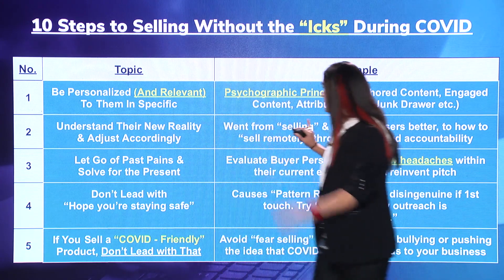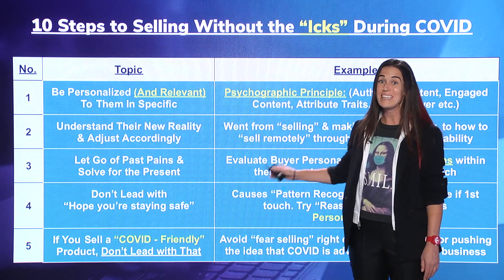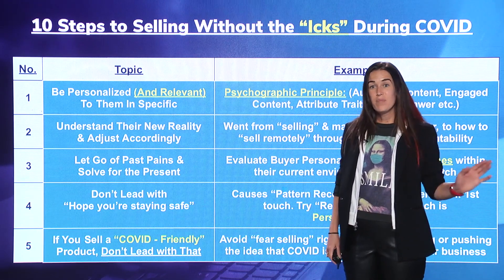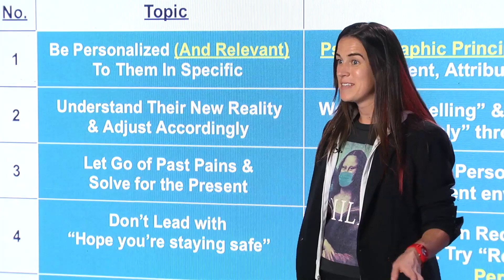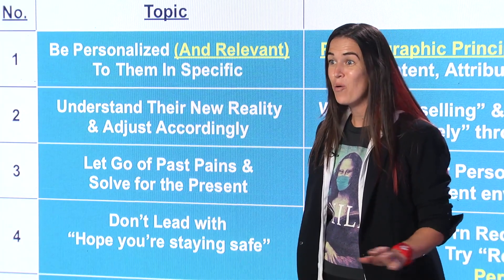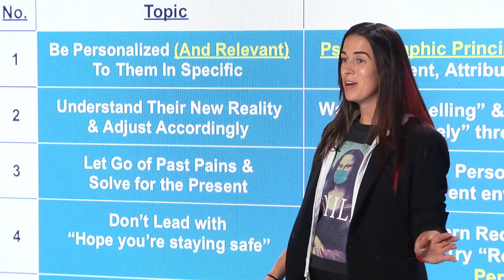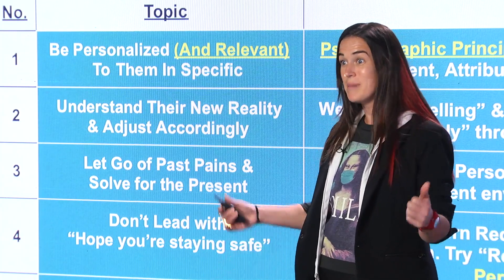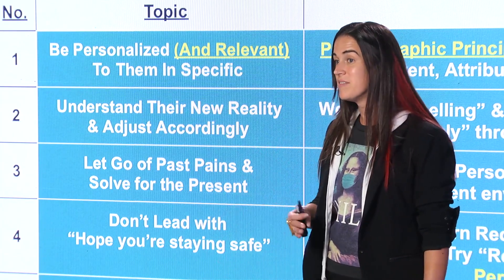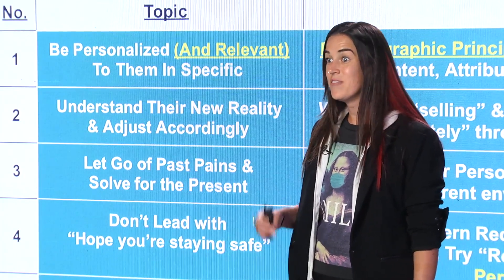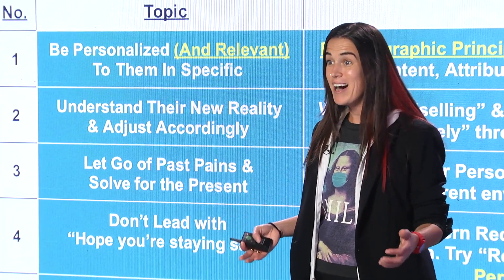Number five: if you do sell a COVID-friendly product, I wouldn't lead with that. There are a number of businesses — like Zoom — where the pandemic was actually advantageous. Sherman Toilet Paper, for instance, saw a massive uptick. It's okay that the pandemic worked to the favor of some businesses. What is not okay is if you are trumpeting that right off the bat and seeming to have no remorse about what's going on.